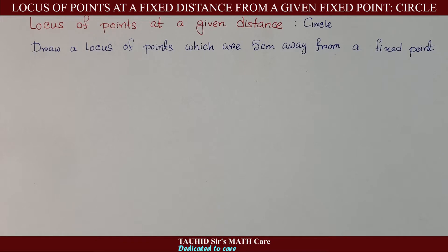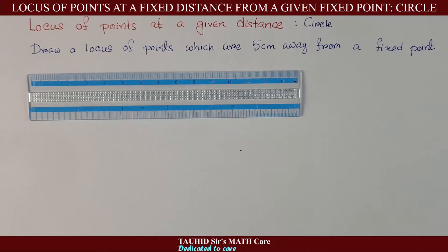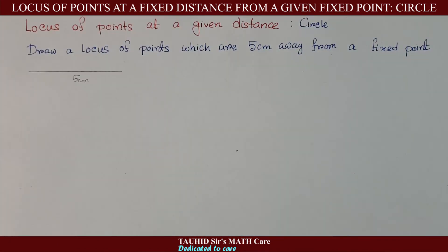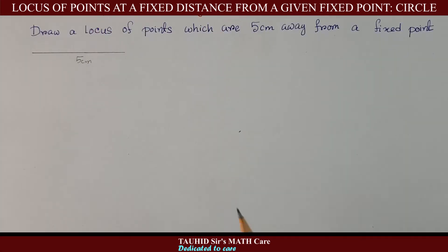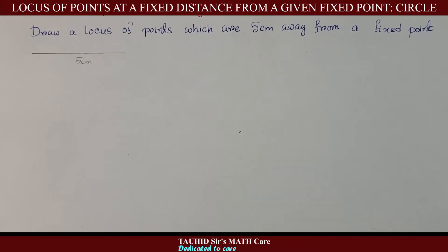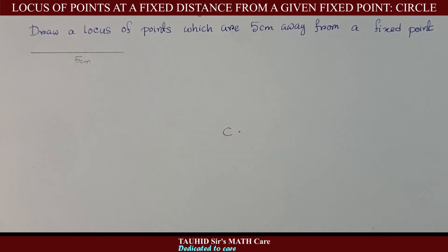Now, coming to our question — we are asked to draw the locus of points which are five centimeters away from a fixed point. That means we need to draw a circle with center at the given point and with radius five centimeters. First, we will define a radius of five centimeters by drawing a straight line which is five centimeters long. Now, if we assume this is our fixed point, we give it the name C.